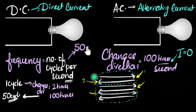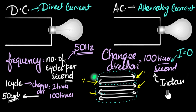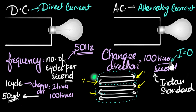Cycles per second is also often called Hertz, named after the scientist Heinrich Hertz. So if the current is changing its direction, or if the current goes to zero 100 times a second, that means the frequency is half of that — 50 Hertz. This is the standard chosen in India, so everyone in India gets about 50 Hertz frequency of alternating current. In the United States, this number is about 120 times per second, which means the frequency would be 60 Hertz.